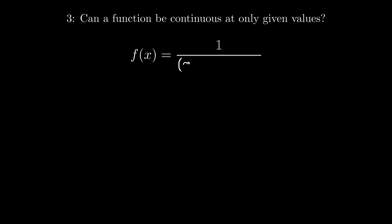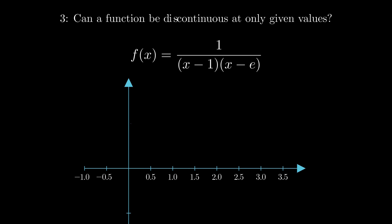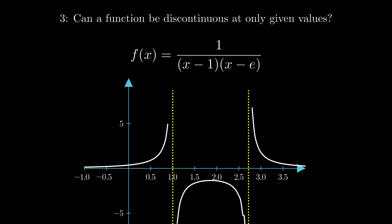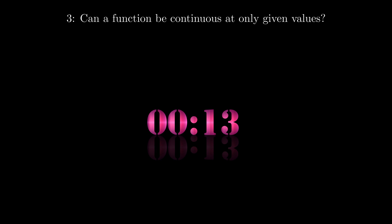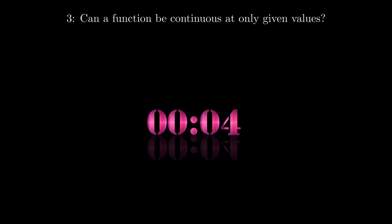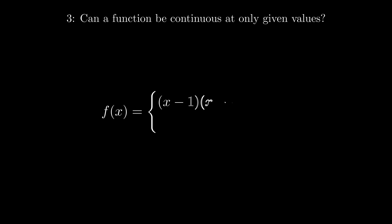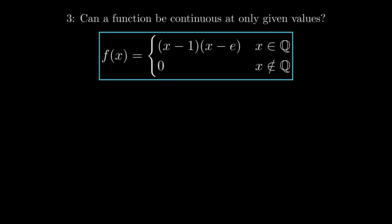Let's do something even fancier. Can a function be continuous at only given specific values? Here is a hint: this function is only discontinuous at one and e. Consider this function: when x is irrational it is zero; when x is rational it is the polynomial (x − 1)(x − e). This function is only continuous at one and e.